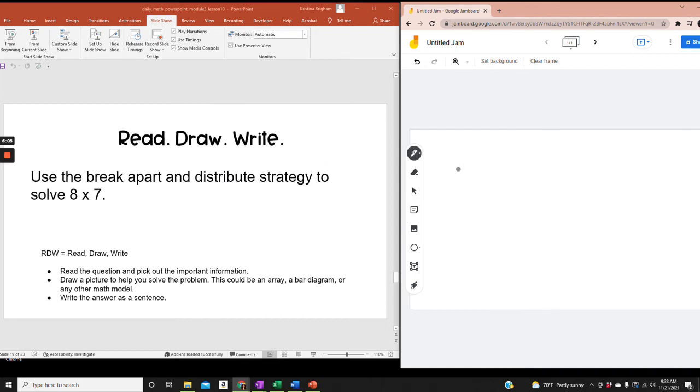And I'm going to write 8 times 7 equals something times 7 plus something times 7. And as I said, I want to try using a 5 fact. So I'm going to say 5 times 7. And I know that 8 minus 5 equals 3, so that means I'm going to put the 3 there. So 8 times 7 equals 5 times 7 plus 3 times 7.